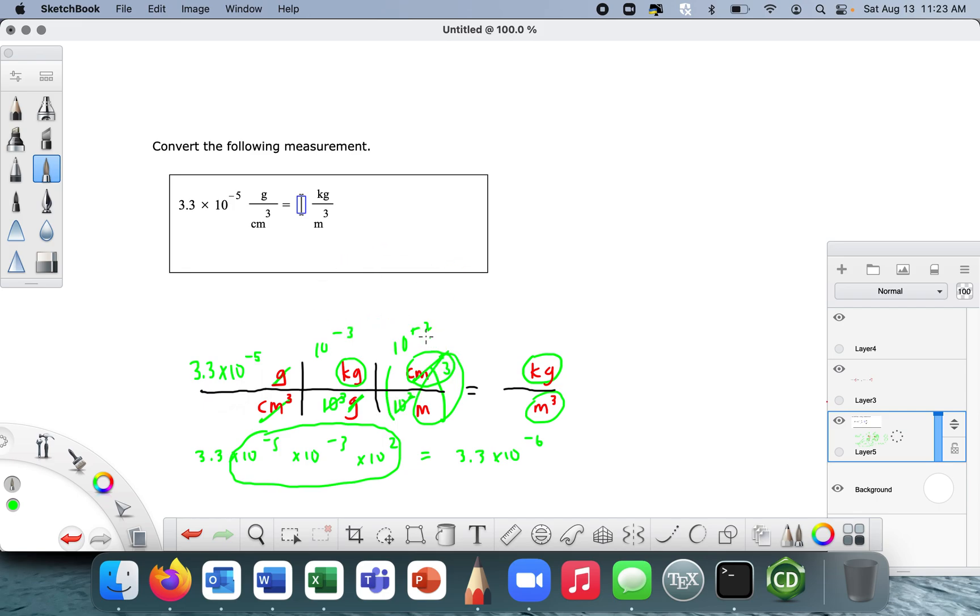That 10 to the minus 2, I forgot to cube it. This is really 10 to the positive 6, right? Because it's got to be cubed. Right? Every piece inside there's got to be cubed.